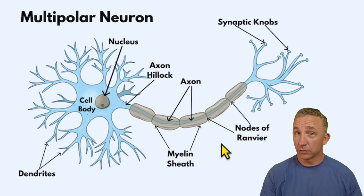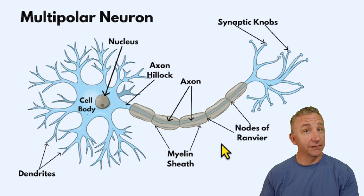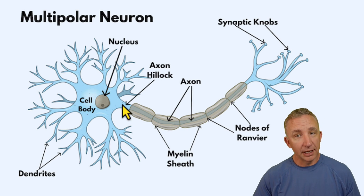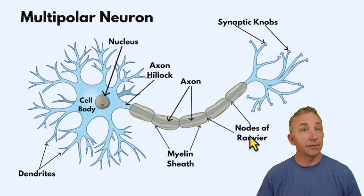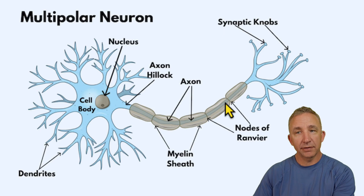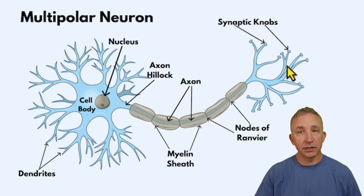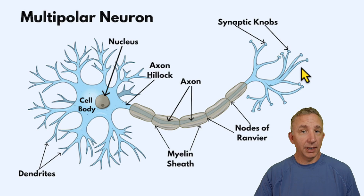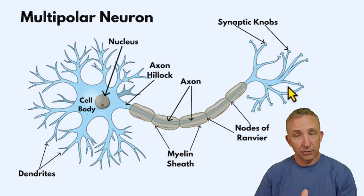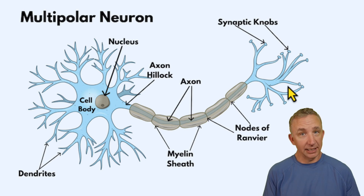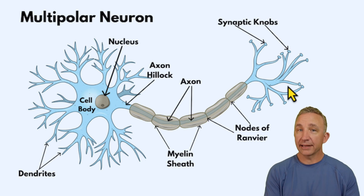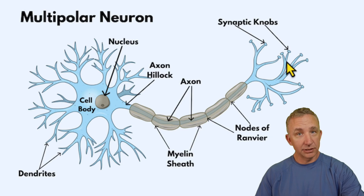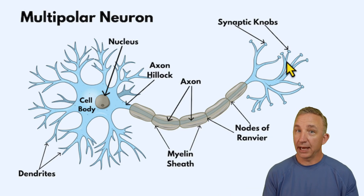I always think of it like this: if I'm trying to run across a room, is it faster to run from one wall to the next, or to jump from one wall to the next? If I can jump, it's going to be faster — and that's what the impulse is doing, jumping from one node of Ranvier to the next. As I process and move all that information, it gets down to the end of the neuron, which we call synaptic bulbs or synaptic terminals. This is when we're releasing communication, usually by way of a neurotransmitter, to process what just occurred and give a reaction — such as the neuromuscular junction where neurons talk to muscles. So we're releasing either a connection to talk to the next neuron or to the effector, which is a muscle or a gland.